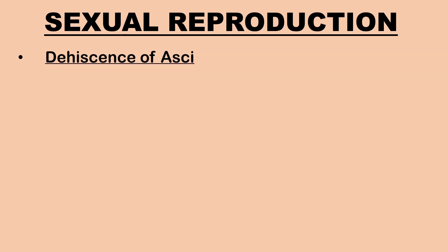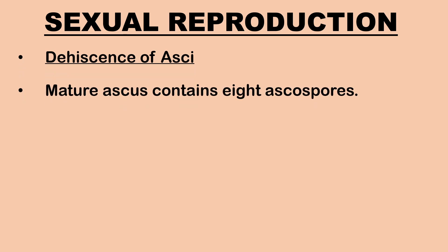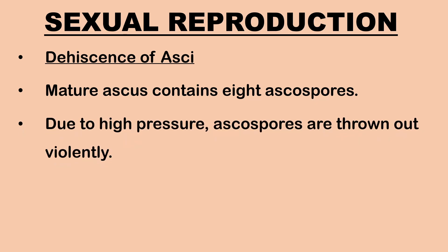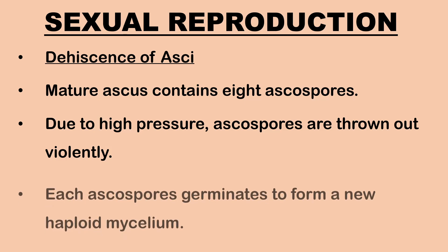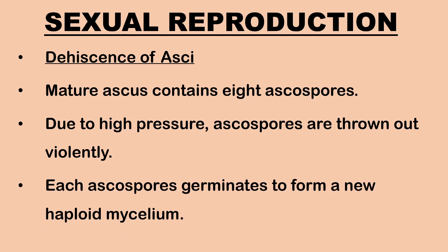The mature club-shaped asci each contain eight unicellular ascospores arranged in a uniseriate manner. Due to high pressure within the ascus, the ascospores are thrown out violently. Each liberated ascospore, under suitable conditions, germinates and forms a new haploid mycelium.